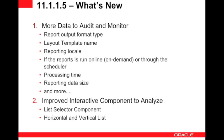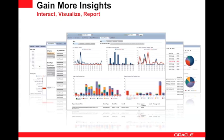Those were the data points from the first release of BI Publisher 11G. With 11.1.5, we added more data to audit and monitor - specifically report-level details such as report output format type, layout template, reporting locale, processing time, reporting data size, and whether reports were run online on-demand or through the scheduler. We also improved the interactive component by adding a list selector component, allowing you to quickly navigate through large amounts of auditing data to gain more insights.